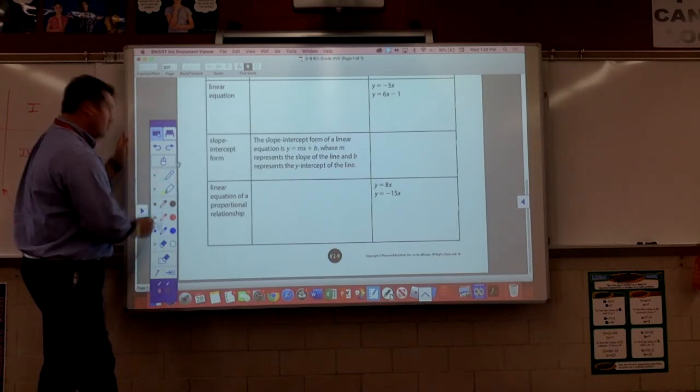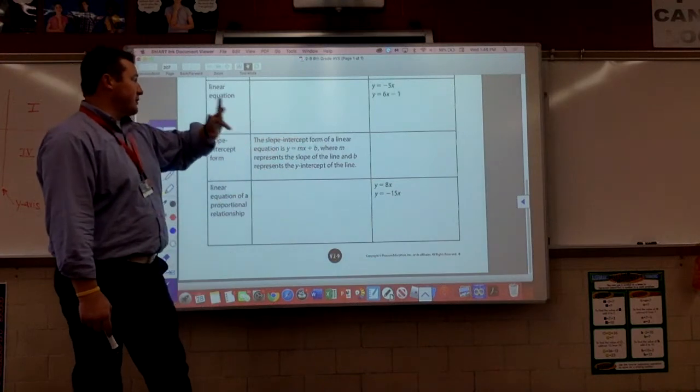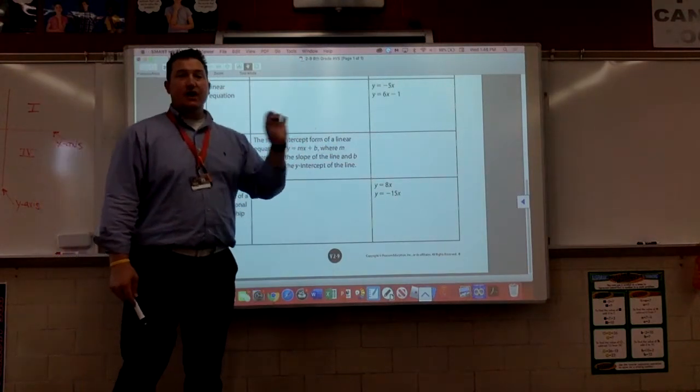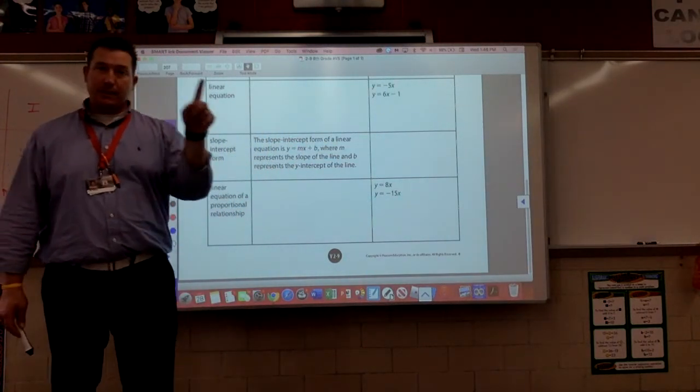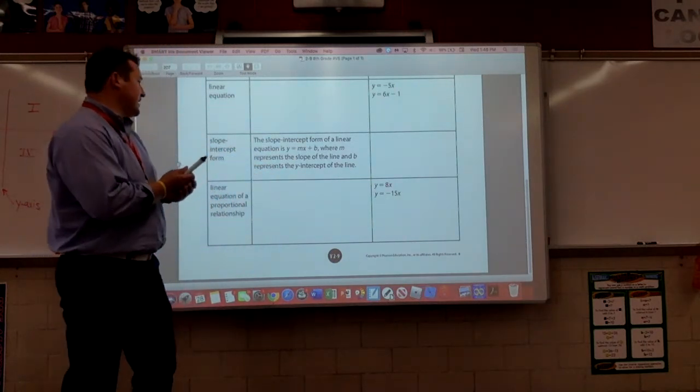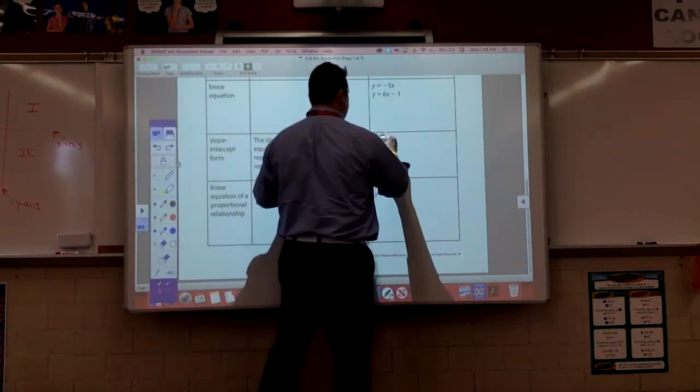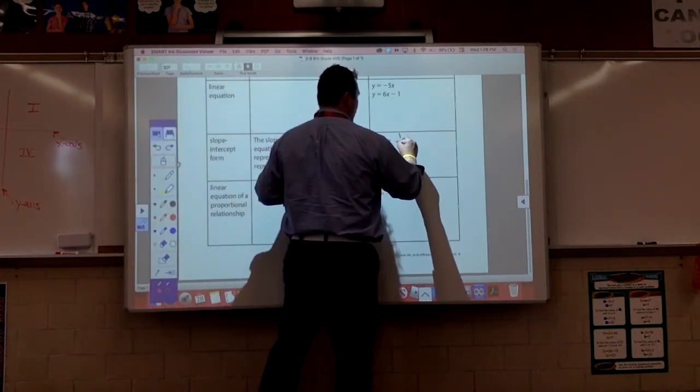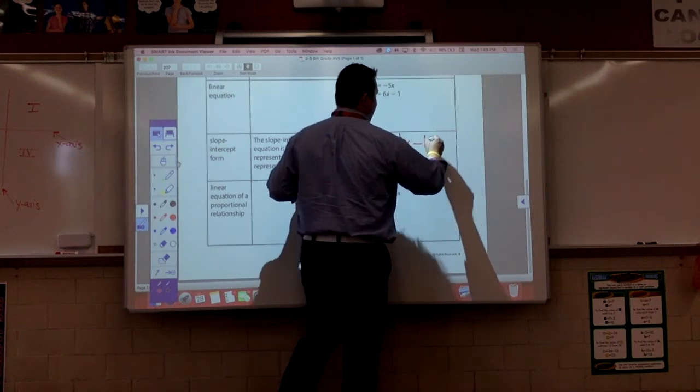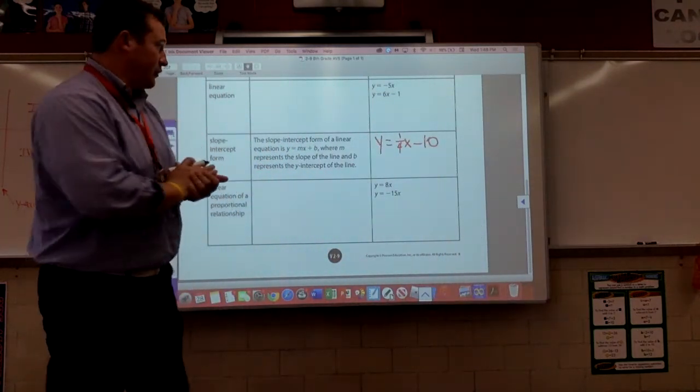Slope-intercept form. This one says slope-intercept form of a linear equation is this, y equals mx plus b, where m is the slope and b is the y-intercept. If we were going to write something in slope-intercept form, guys, how about this? Y equals one-fourth x minus 10. That's in slope-intercept form.